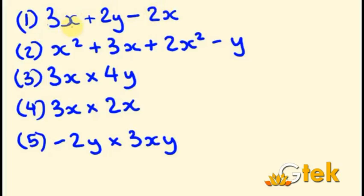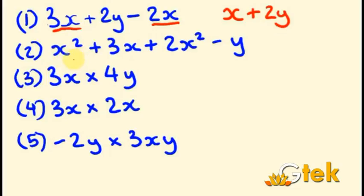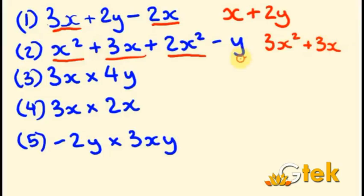First equation: 3X plus 2Y minus 2X. Here 3X and 2X are X components — subtracting gives X. So the simplified result is X plus 2Y. Second equation: X squared plus 3X plus 2X squared minus Y. The X squared component appears twice, so X squared plus 2X squared is 3X squared. The result is 3X squared plus 3X minus Y.